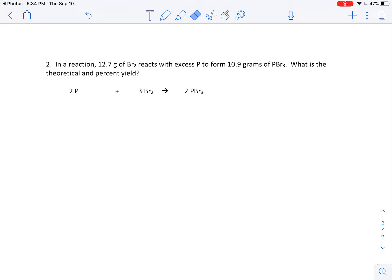Number two here, starting with 12.7 grams of Br2, working with excess phosphorus so I don't care about the phosphorus.